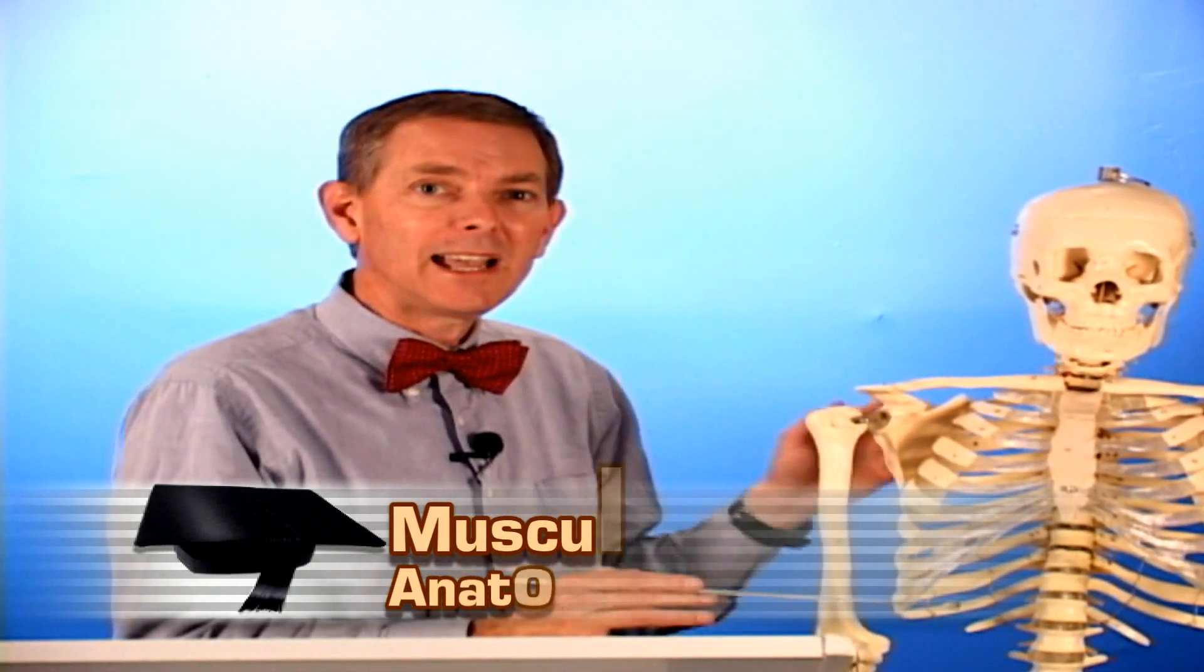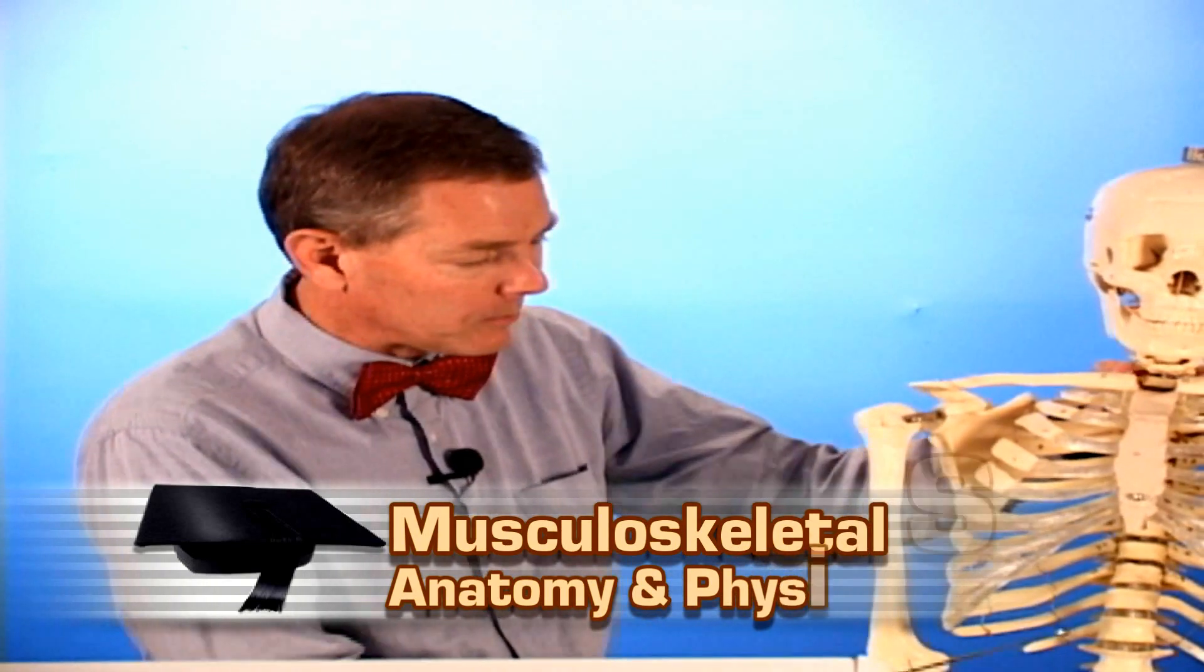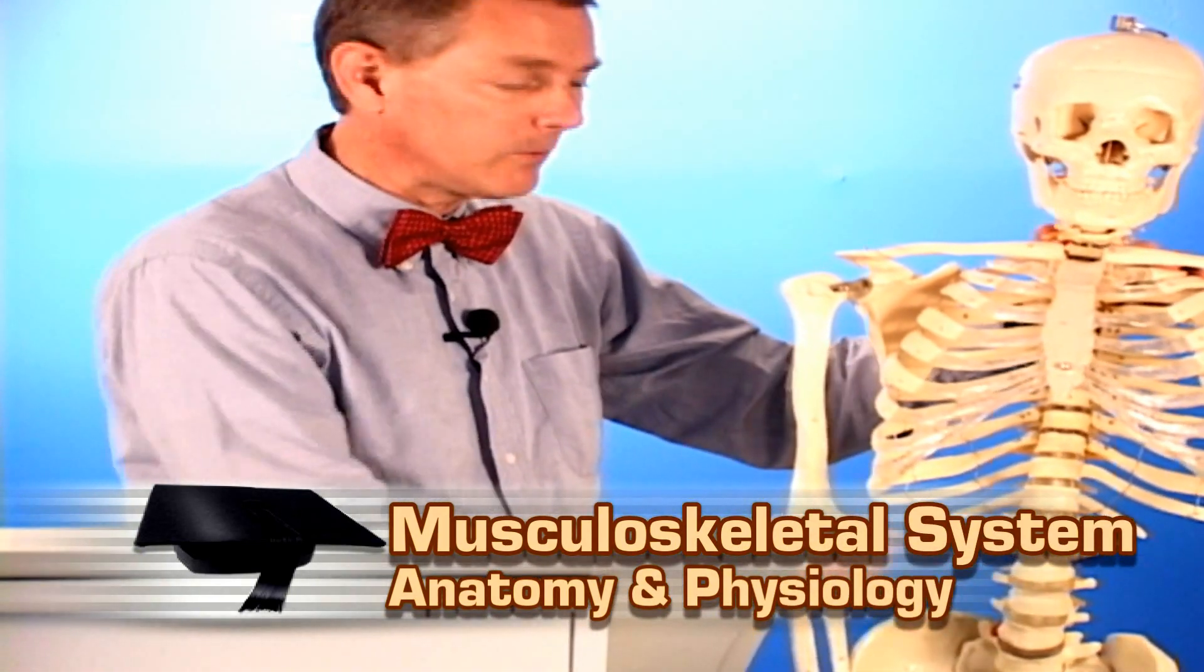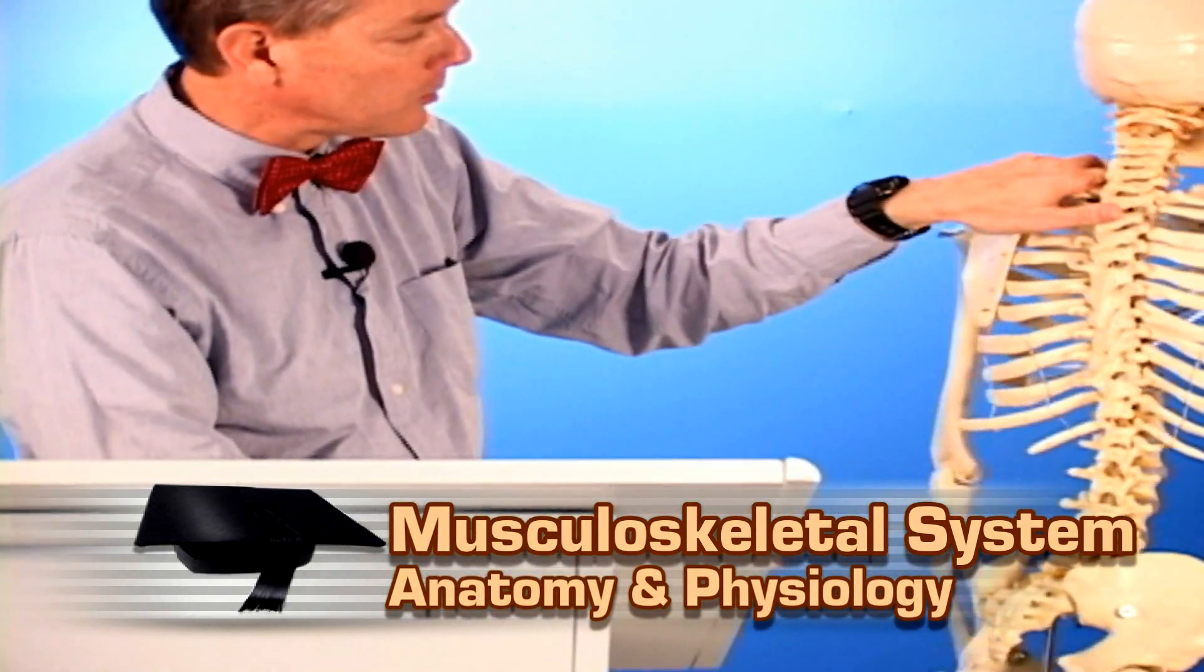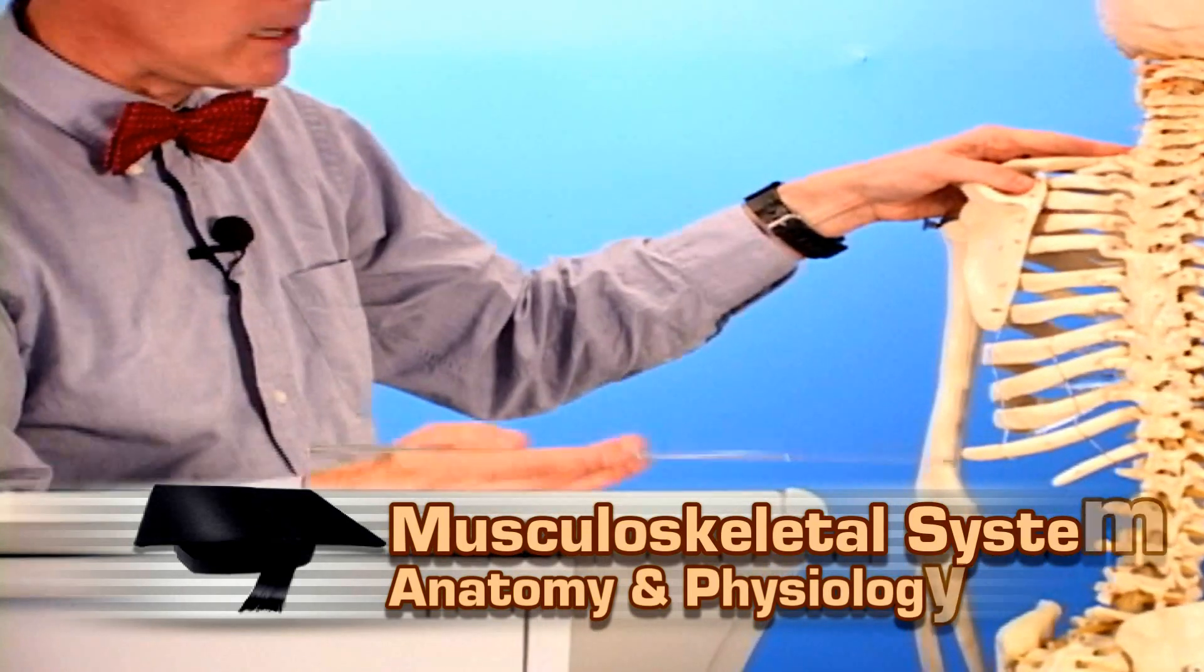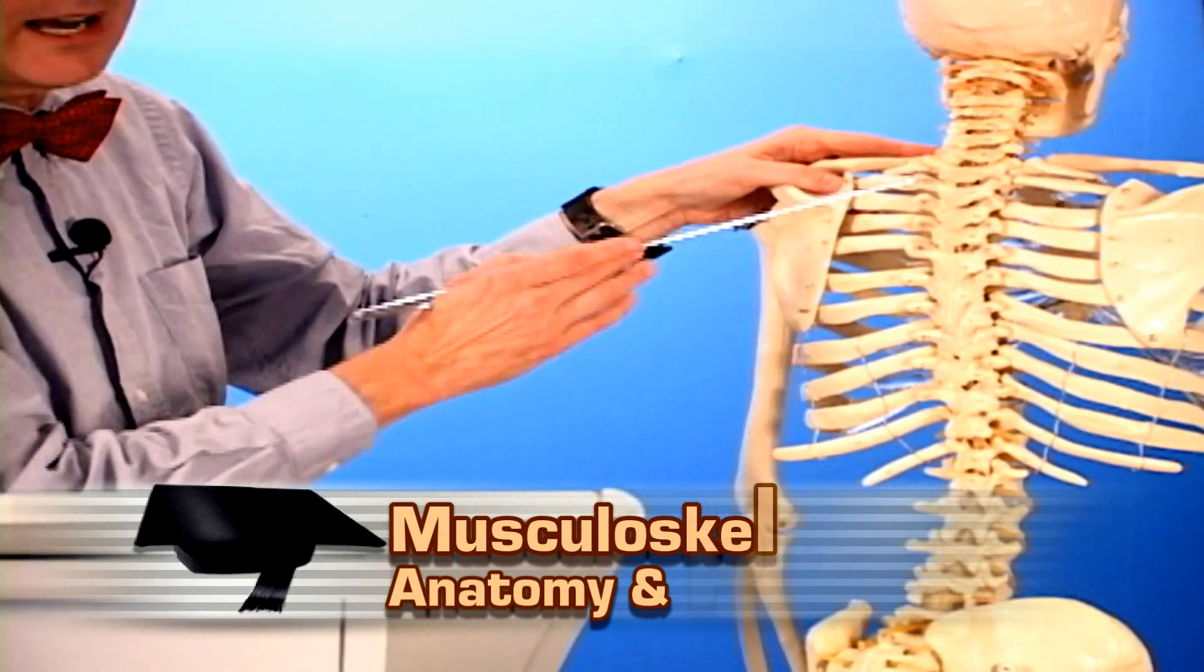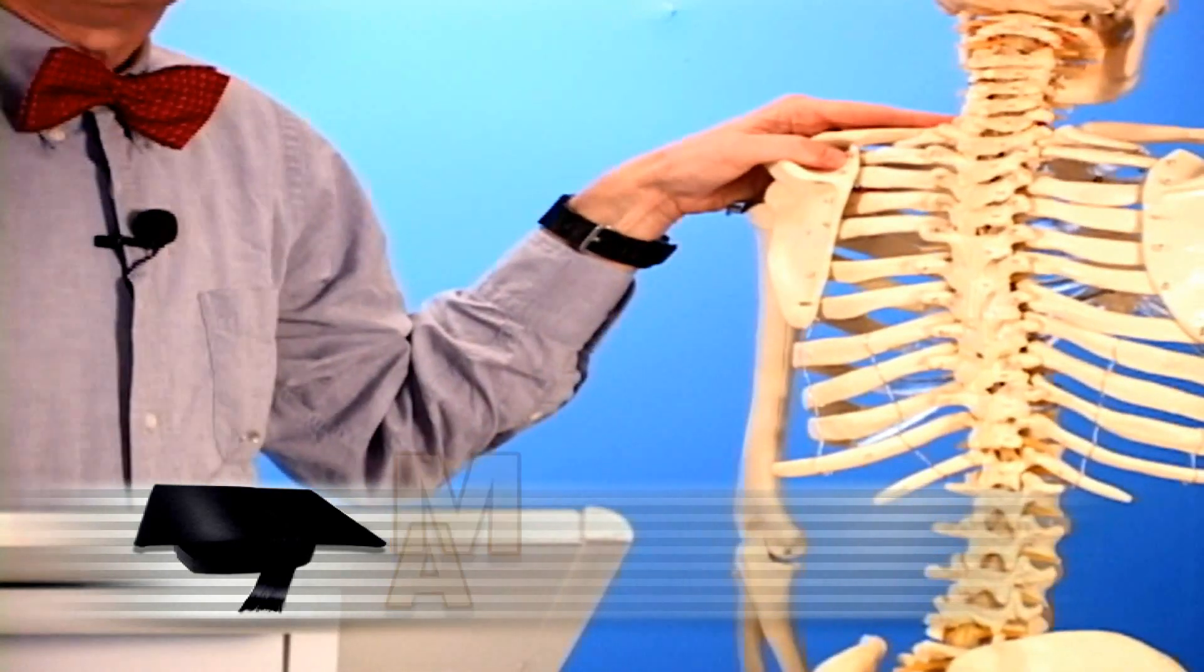Raising the thoracic cavity in inspiration, we have the diaphragm at the base of the ribs for inspiration. On the back with the vertebral column, you're going to have all kinds of axial type muscles that run the length of the vertebral bodies.